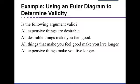Let's try this one. Is the following argument valid? It has three premises: one, all expensive things are desirable; two, all desirable things make you feel good; three, all things that make you feel good make you live longer. The conclusion: all expensive things make you live longer. By the way, just because an argument is valid doesn't mean it's actually true in real life — we're assuming the premises and basing validity on those assumptions only.